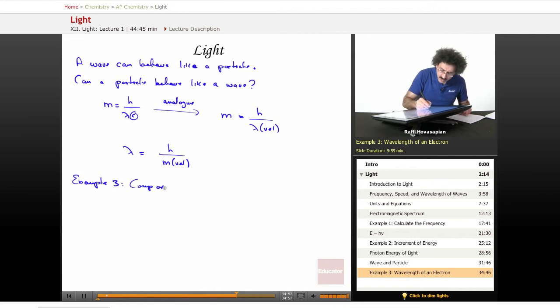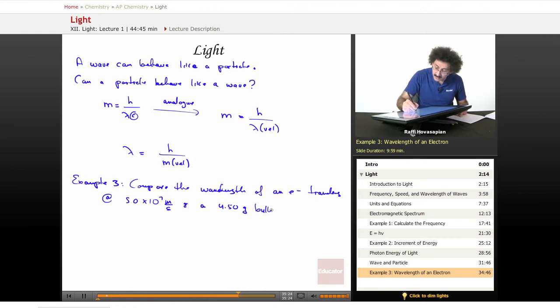We want to compare the wavelength of an electron traveling at 5.0 times 10 to the 7 meters per second and a 4.50 gram bullet going 950 meters per second.